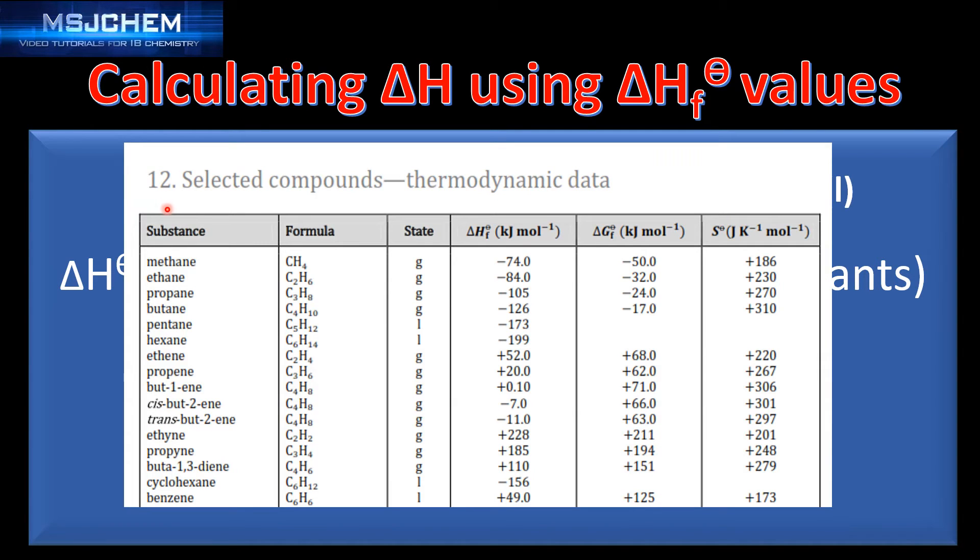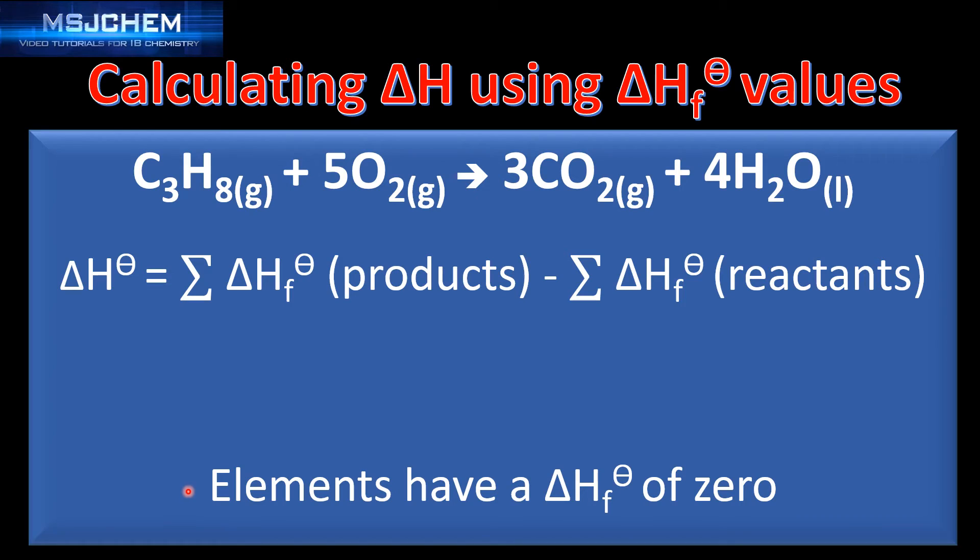You can find the standard enthalpy change of formation values in table 12 in the data booklet. The fourth column shows standard enthalpy change of formation values. An important point to note is elements such as O2 oxygen have a standard enthalpy change of formation value of zero.